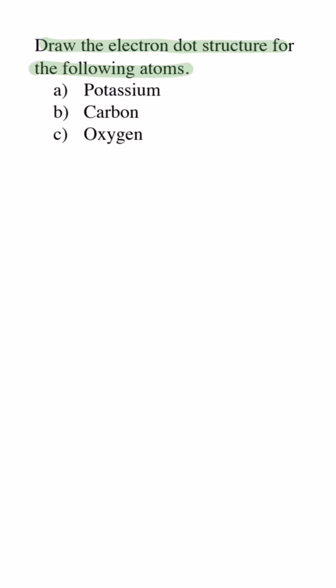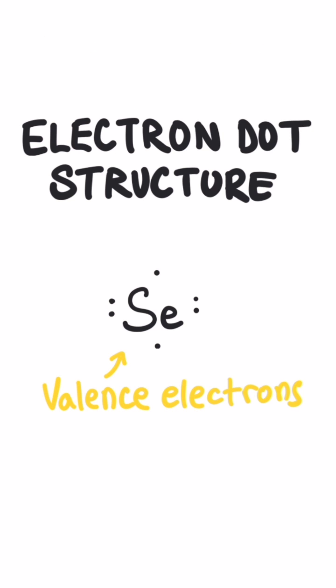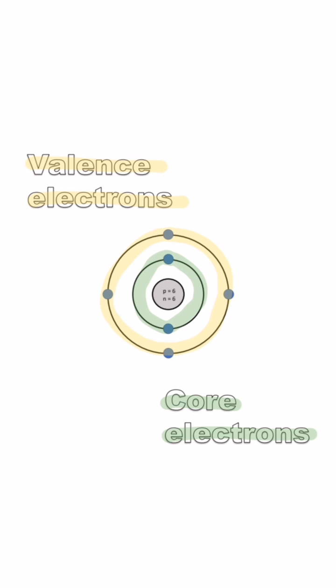Draw the electron dot structure for the following atoms. An electron dot structure is a diagram that shows the valence electrons for an element as dots. Valence electrons are the electrons in the highest occupied energy level of an element's atom.